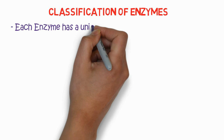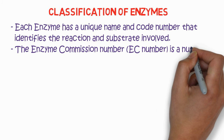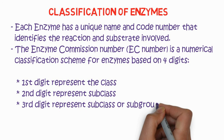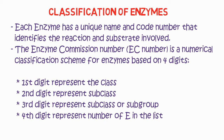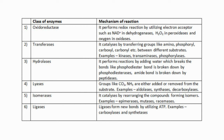For classification of enzymes, each enzyme has a unique name and code number identifying the reaction and substrate involved. The Enzyme Commission (EC) number is a numerical classification scheme based on four digits: the first digit represents the class, the second the subclass, the third the sub-subgroup, and the fourth the specific enzyme number. On this basis, there are six classes: oxidoreductases, transferases, hydrolases, lyases, isomerases, and ligases. Oxidoreductases perform redox reactions using electron acceptors such as NAD, and include dehydrogenases, peroxidases, and oxidases.